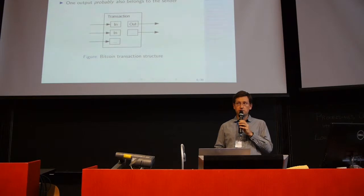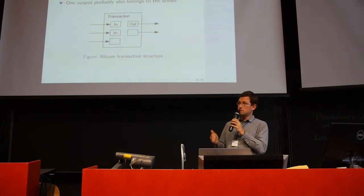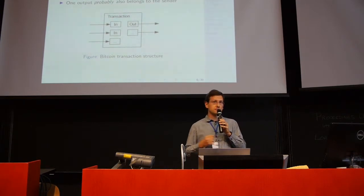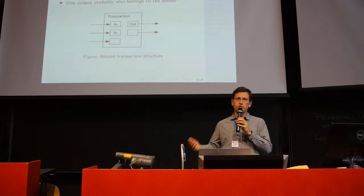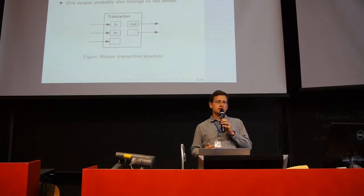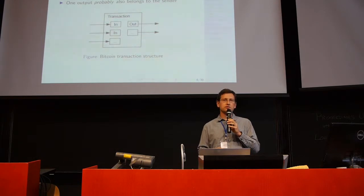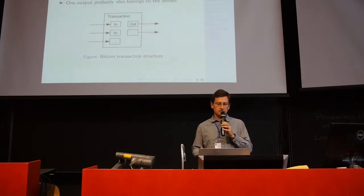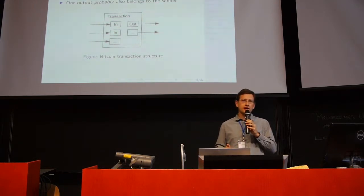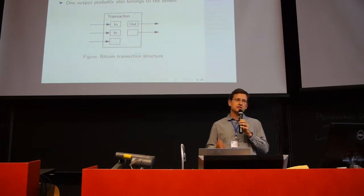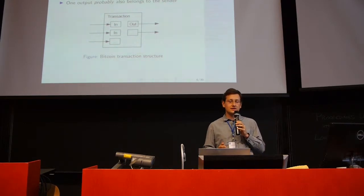This is how a typical Bitcoin transaction looks like. It consumes a number of inputs and produces a number of outputs, which will be inputs for next transactions. And one very simple heuristic is that all inputs probably belong to the same person or the same entity, the sender. Of course, this is not true in all the cases because there are such things as multi-signature transactions, but in many cases this is true.